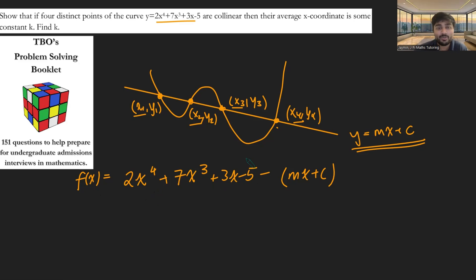Okay, great. So that tells me that this quartic here can be written as x minus x1 times x minus x2 times x minus x3 times x minus x4, like so. And because the coefficient of x to the 4 here is 2, we need to make sure we put a 2 at the front to account for the x to the 4 when we expand it.